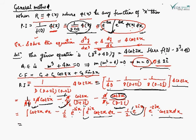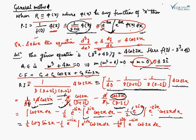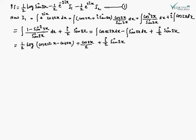The integration of cot 2x is (1/2) log sin 2x. So the particular integral becomes: (1/2) log sin 2x minus (1/2) e to the power −2ix times I1, minus (1/2) e to the power 2ix times I2, where I1 = ∫ e^(2ix) cot 2x dx and I2 = ∫ e^(−2ix) cot 2x dx. We solve these two integrations separately.